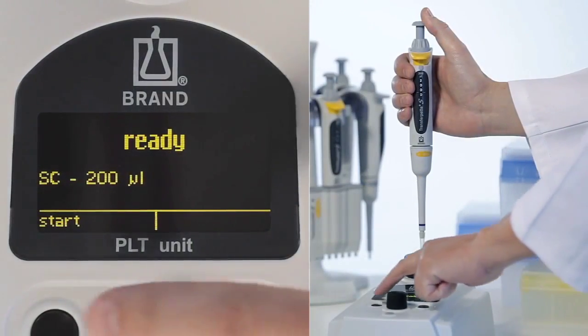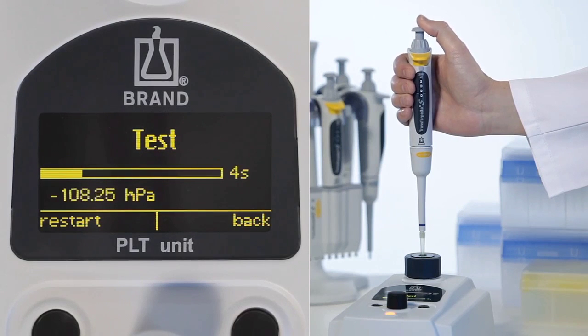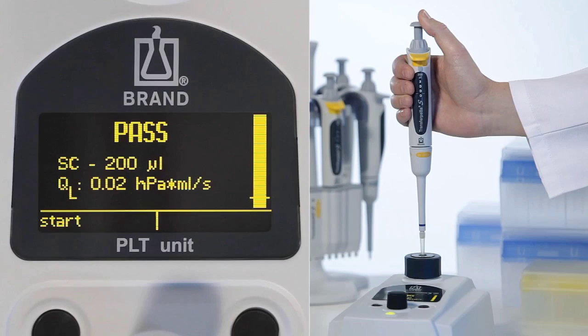We now test a pipette with a tip attached and press down the pipetting button several times during the measuring phase to detect possible problems with the piston. Testing shows that the pipetting system is leak-tight.